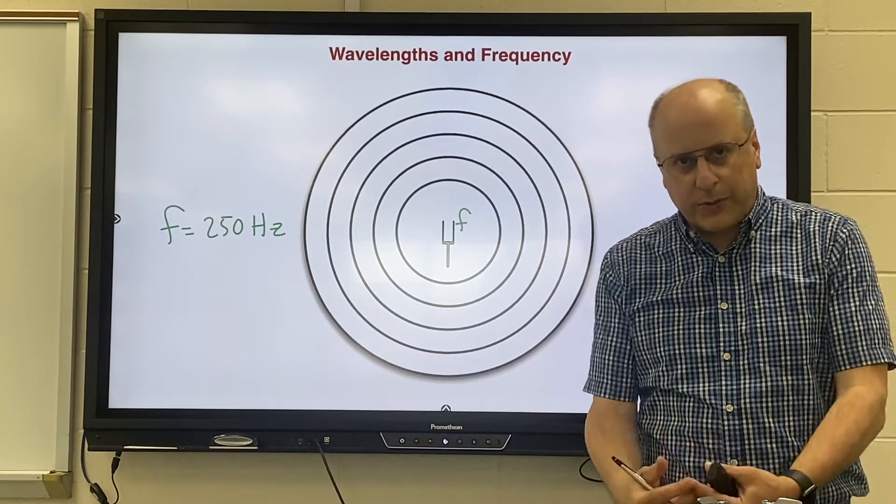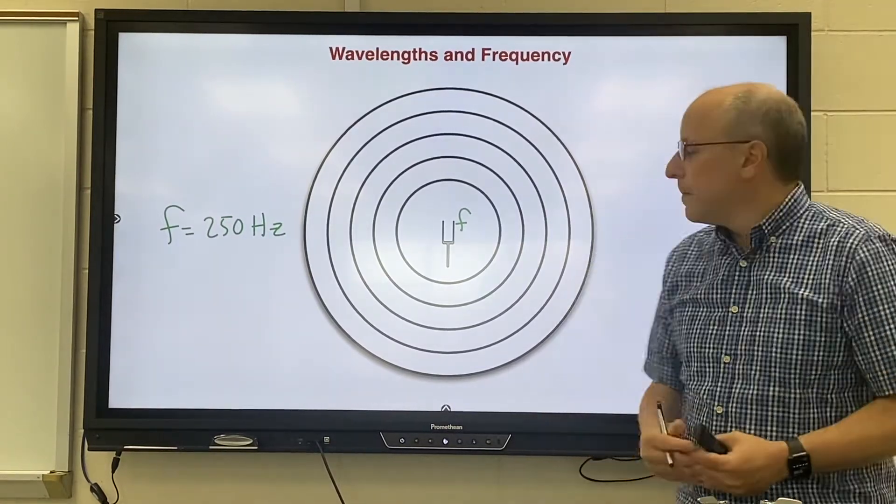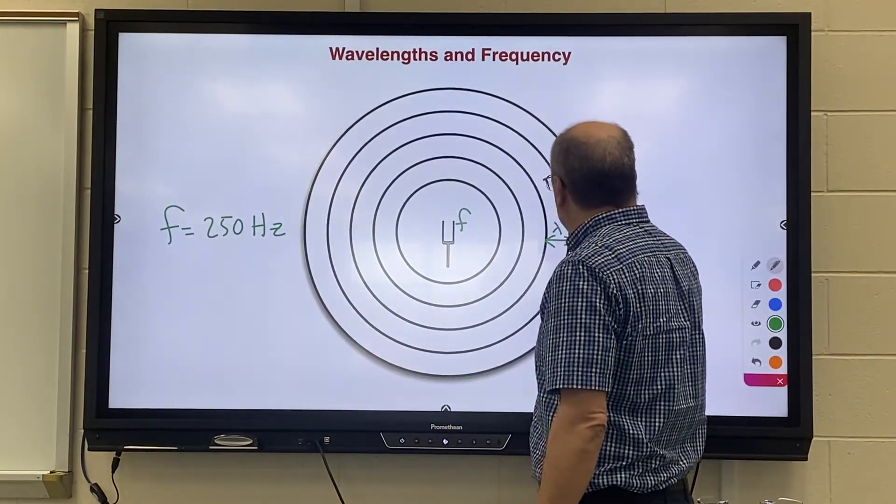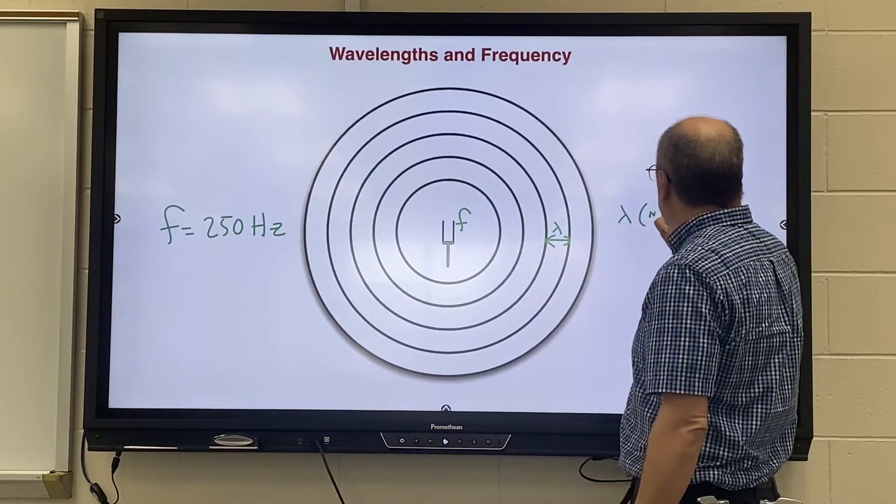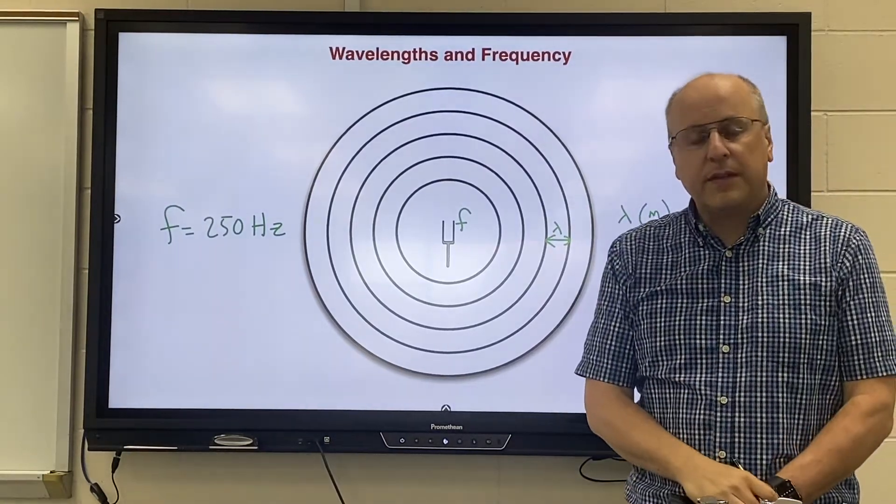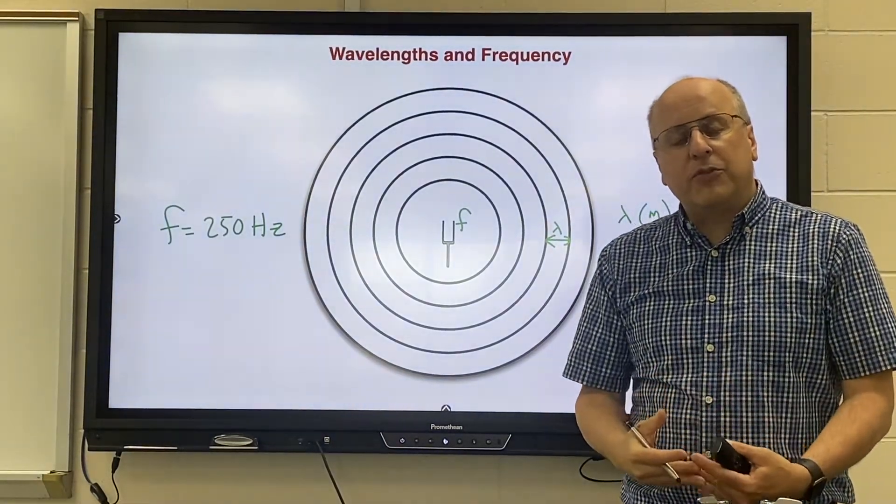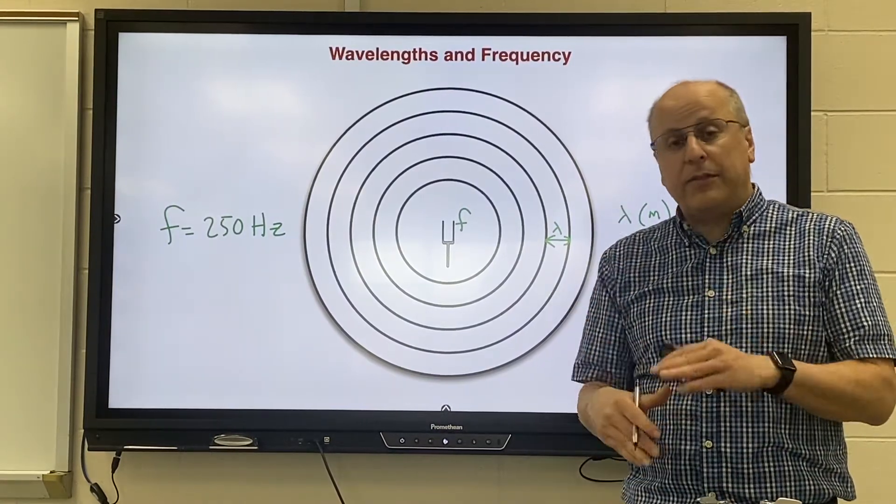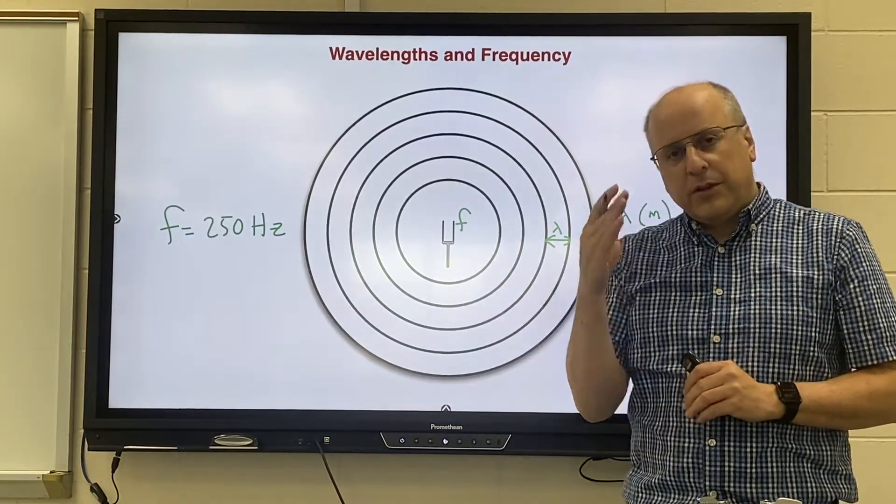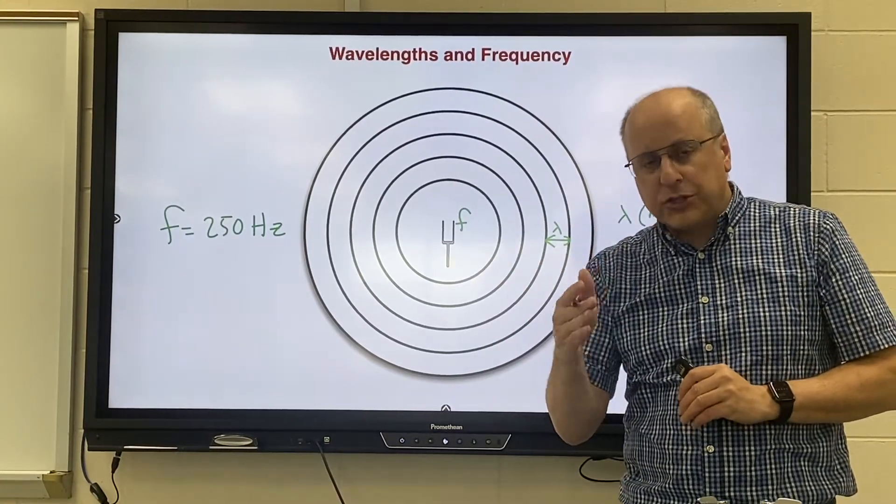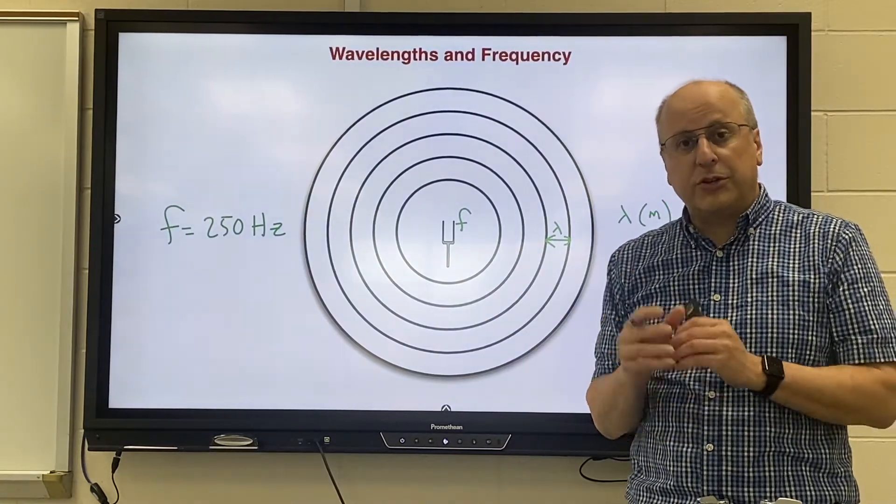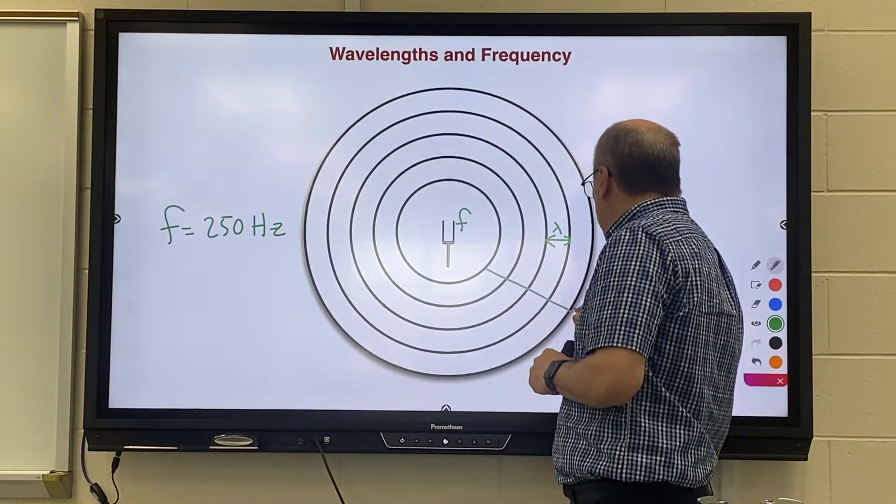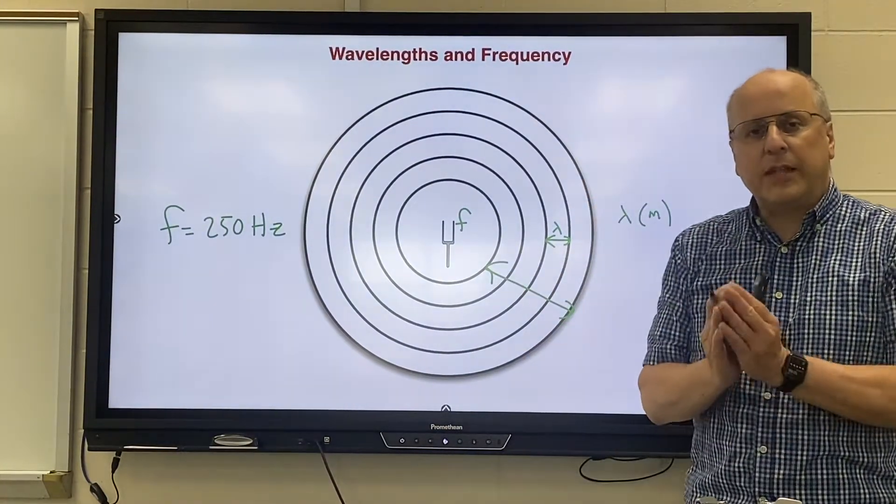Wavelength on the other hand is the distance measured in meters between two adjacent waves. Wavelength goes by the Greek letter lambda. Again it's measured in meters and it's measured for sound high pressure to high pressure, the nearest high pressure to the other nearest high pressure. You want to make sure they are adjacent waves. You don't want to measure high pressure to high pressure and skip over some, so they have to be adjacent like regions of your wave.